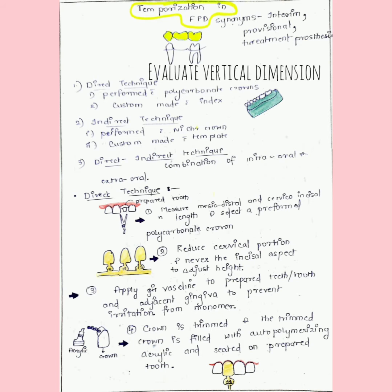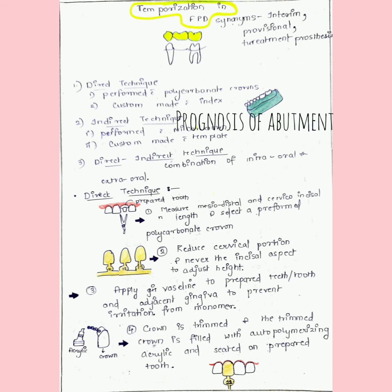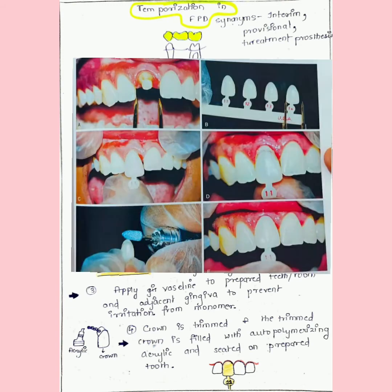Coming to the direct technique, we have this prepared tooth. We measure with the help of a divider its mesiodistal and incisal to cervical width, then we select a preformed crown. We reduce the cervical portion and not the incisal aspect to adjust the height accordingly as per the adjacent teeth.